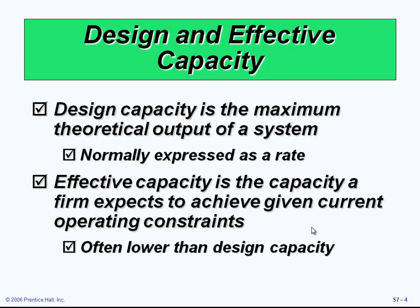We design capacity to be the maximum theoretical output of the system expressed as a rate, but most of the time that maximum capacity cannot be reached. The company defines a measure for their own capacity. The effective capacity is the capacity a firm expects to achieve given current operating constraints, which is often lower than design capacity. Although the design capacity represents a maximum theoretical output, that does not mean we will meet it.